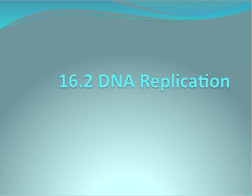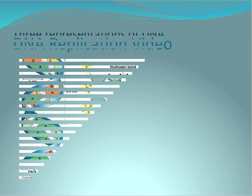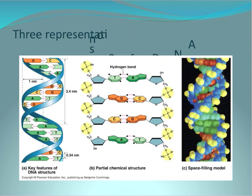The next section looks at DNA replication. There are typically three representations of DNA: one highlighting the key features of DNA, the next showing the partial chemical structure, and last the space-filling model showing the full behavior of electron space-filling attributes.